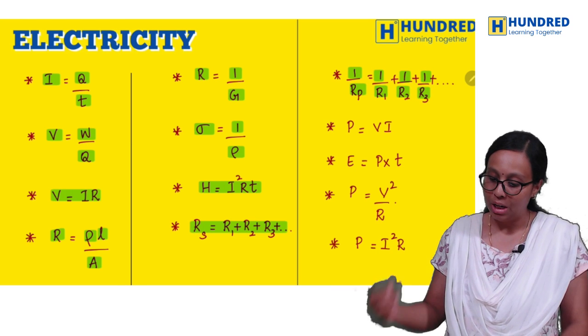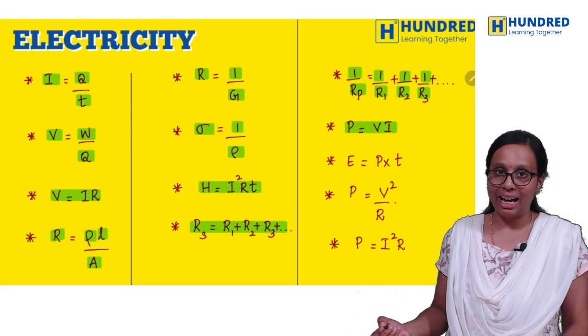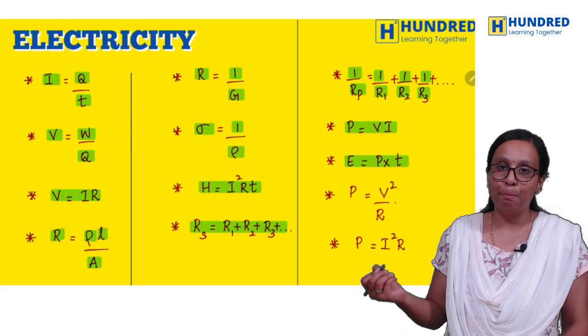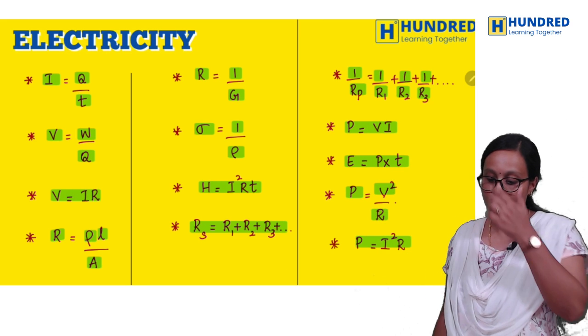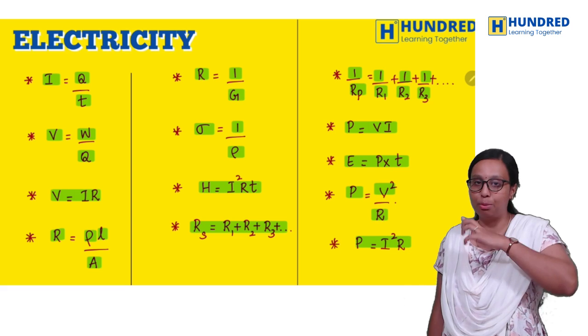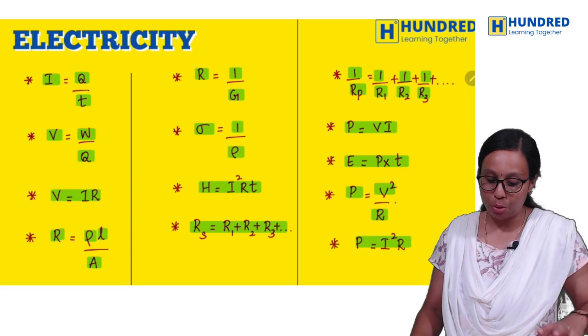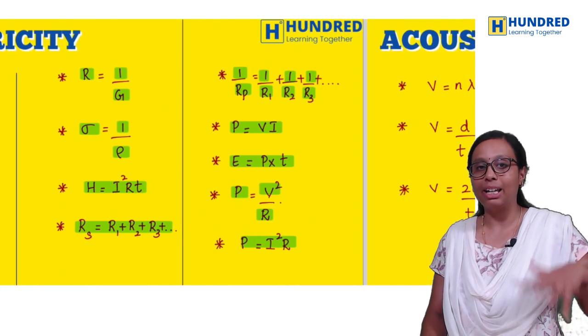Heating effect: H equals I squared RT. Series connection: direct add. Parallel connection: one by R1 plus one by R2. Power formula: VI. Electrical energy: P into T. These are the formulas for electricity chapter.